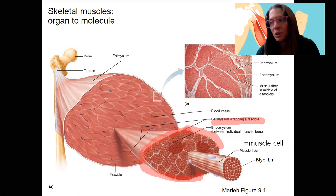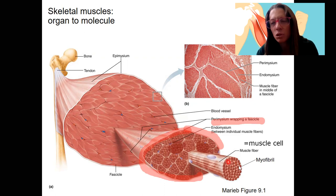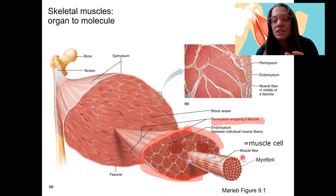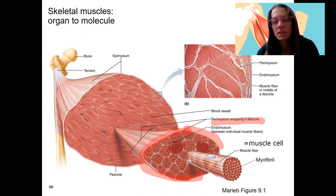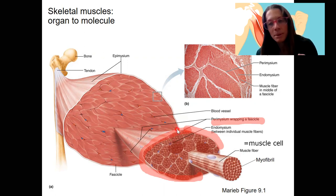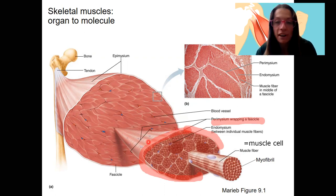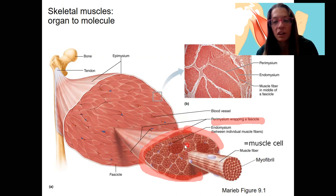The cool thing about this: muscle organ, fascicles, muscle fibers, individual proteins inside the muscle fibers — this all really is what generates force. All of this works in synchrony, so this can generate a whole lot of force. We'll talk about motor units and how many muscle fibers are firing, but there's the potential to generate a whole lot of force because of all these different levels of packaging.